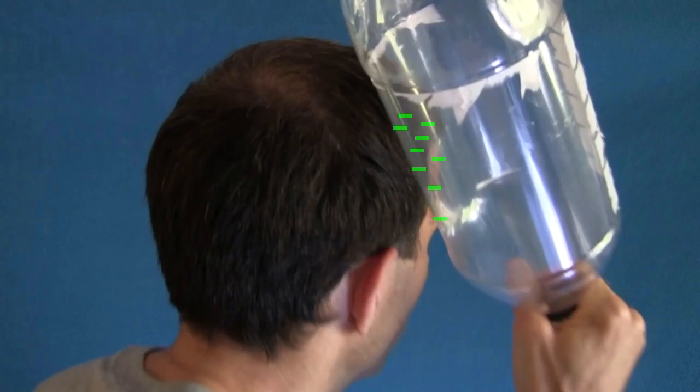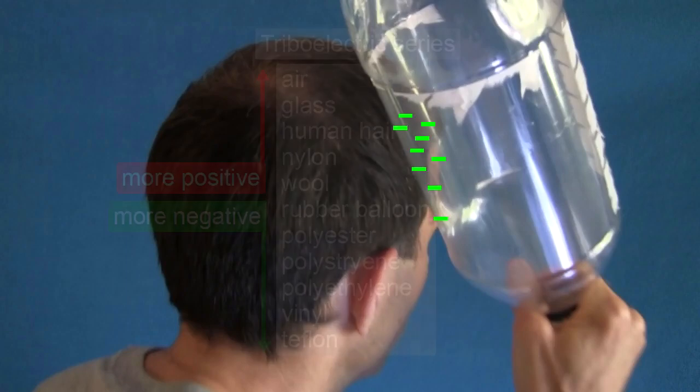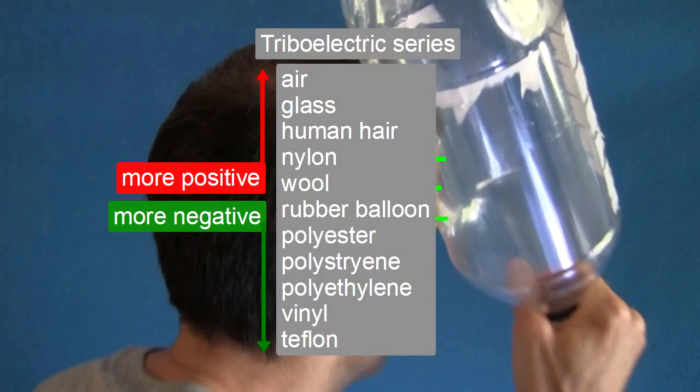We know that if we rub the plastic coke bottle against our hair, the coke bottle will become negatively charged. We know that from the triboelectric series and you can see it here. The coke bottle is made of polyethylene, here at the negative end of the series, and hair is at the positive end.